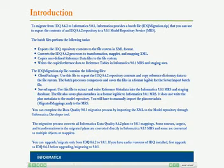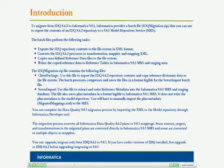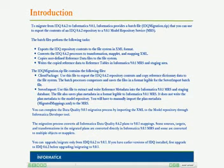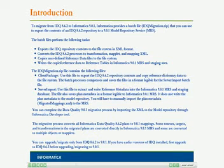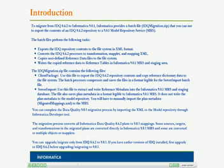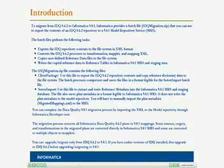You can complete the data quality 9.0.1 migration process by importing the XML to the model repository through the Informatica Developer tool. The migration process converts all Informatica Data Quality 8.6.2 plans to 9.0.1 mappings. Some sources, targets, and transformations in the migrated plans are converted directly in Informatica 9.0.1 MRS, and some are converted to multiple objects. Please note that you can upgrade or migrate only from IDQ 8.6.2 to 9.0.1. If you have earlier versions of IDQ installed, first upgrade to IDQ 8.6.2 before upgrading or migrating to 9.0.1.